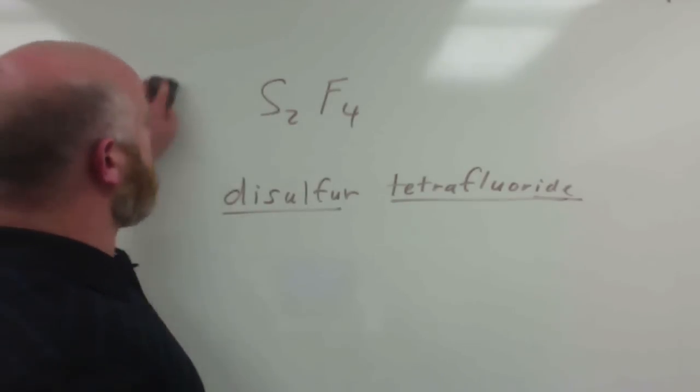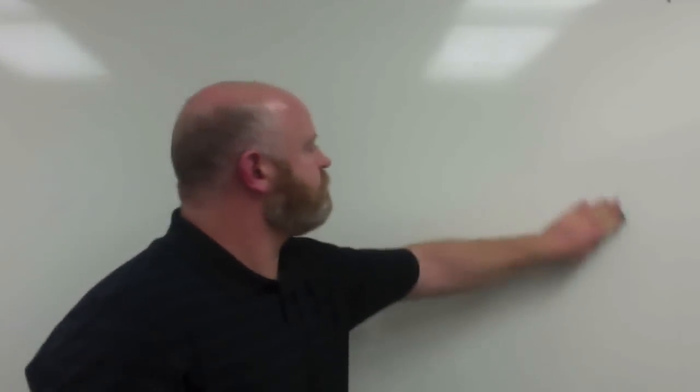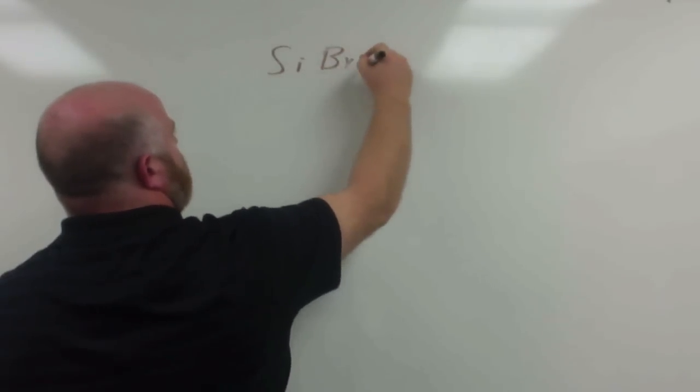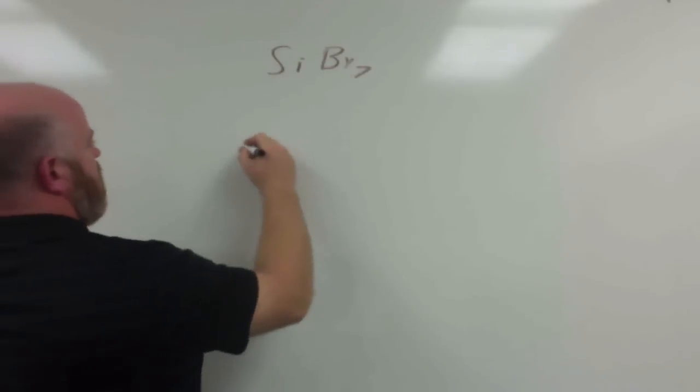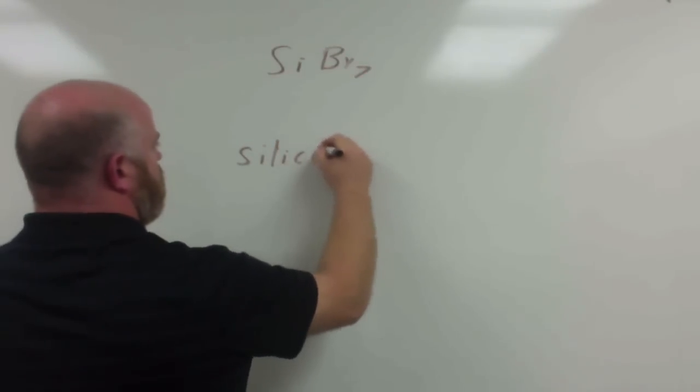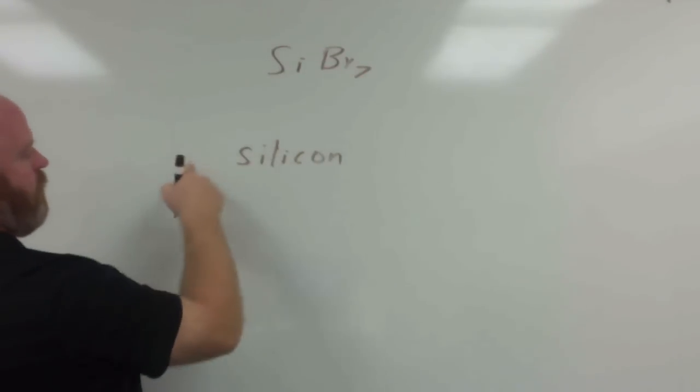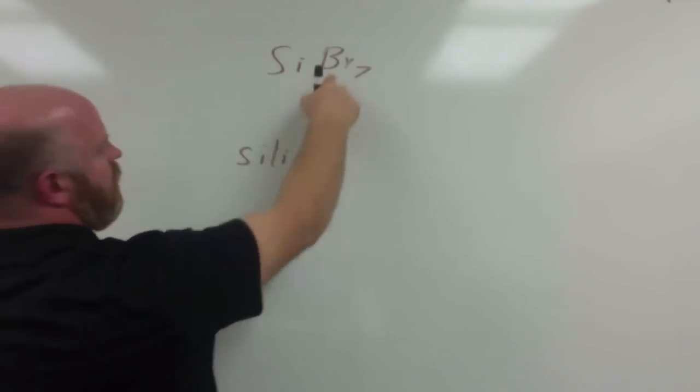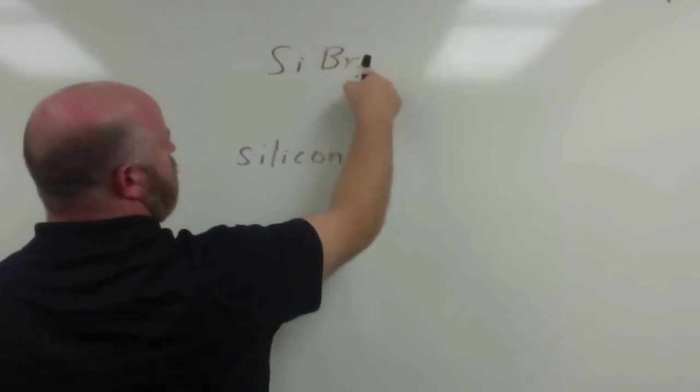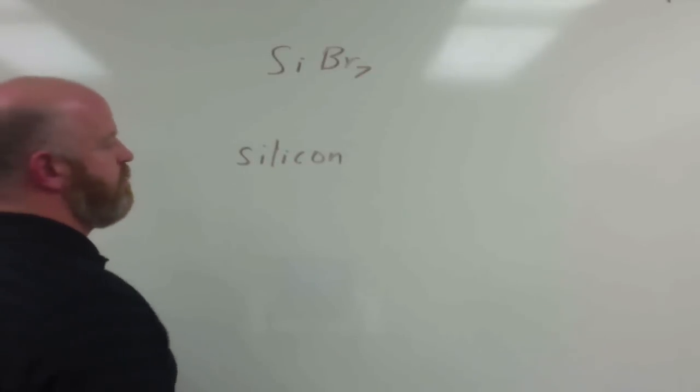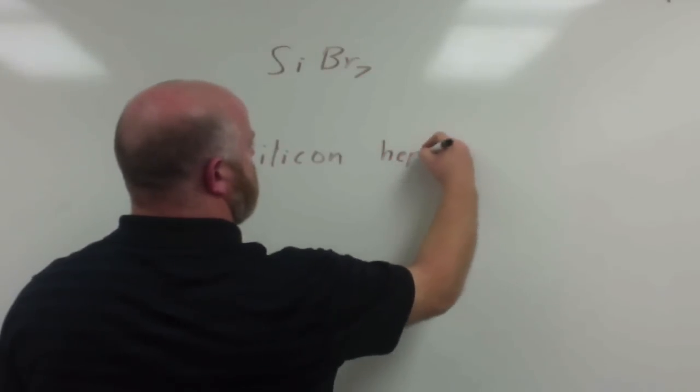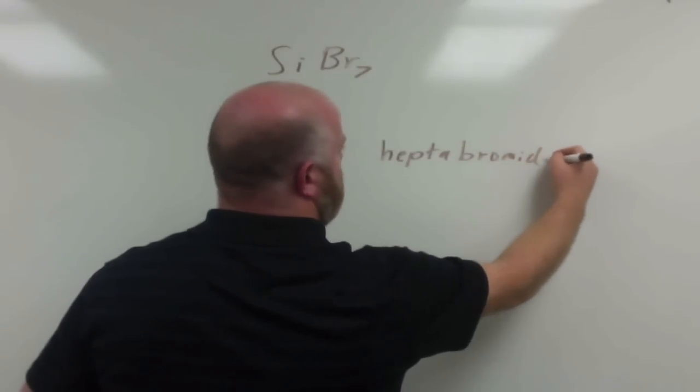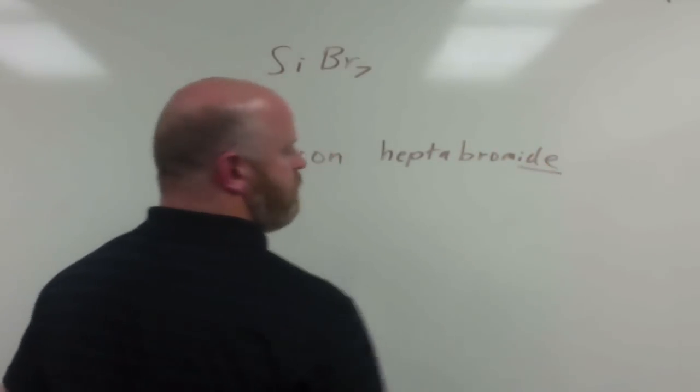Same thing for SiBr7. Si is silicon, but we do not put mono on the first word, so we just leave it as silicon. And Br, we have seven, the prefix for seven is hepta, so we would call this hepta bromide.